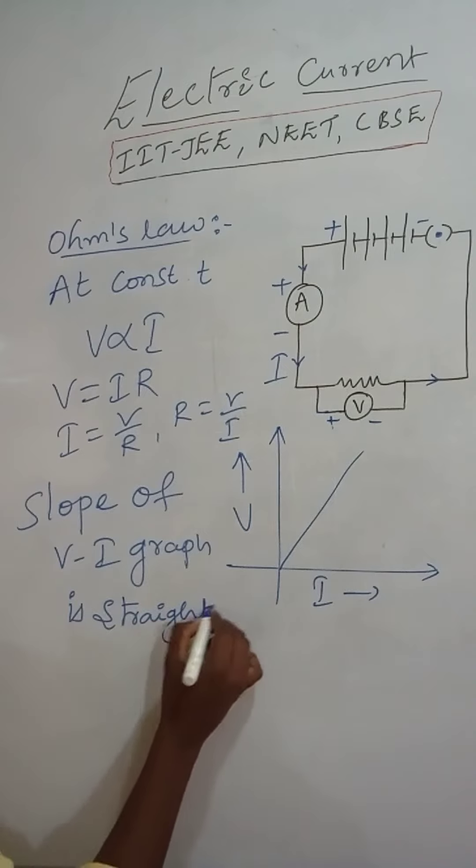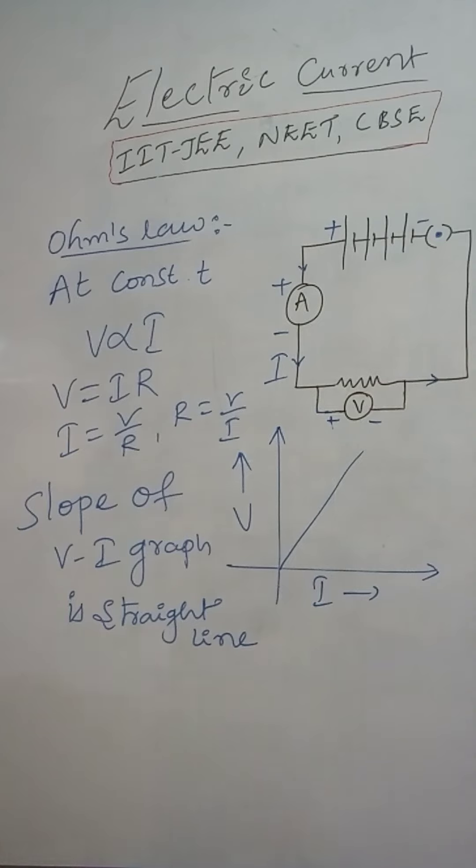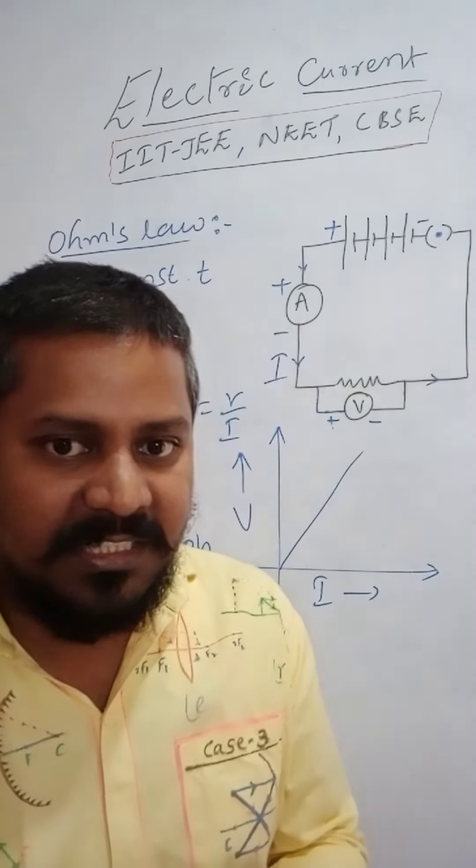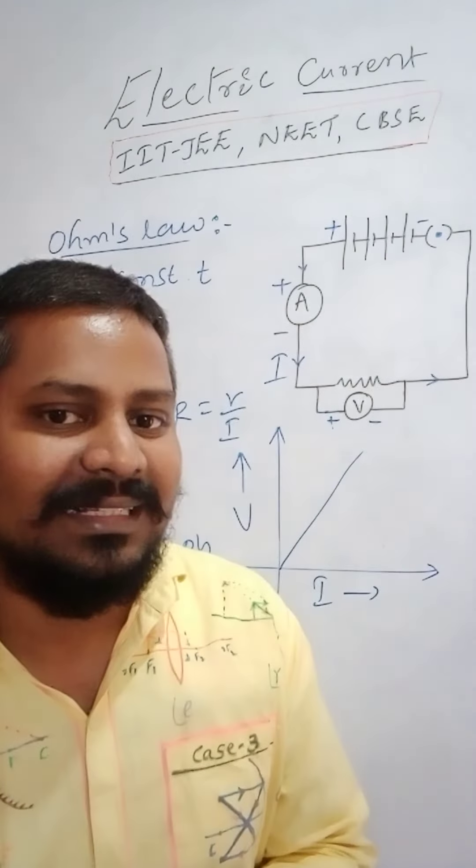Straight line or simply we can consider it is linear. The substances which obey Ohm's Law, those are called Ohmic conductors or Ohmic substances. The substances which does not obey Ohm's Law, those are called Non-Ohmic substances.